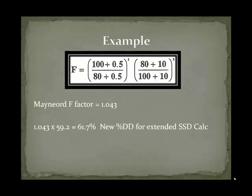When we put those numbers in, we get a Maynard F Factor of 1.043. Once you get that factor, you need to multiply it by your old percent depth dose to get your new percent depth dose. You should get 61.7. That new percent depth dose is what you put into your monitor unit calculation, and then you can do your regular monitor unit calculation. You're going to expect to see a higher number of monitor units for this calculation.